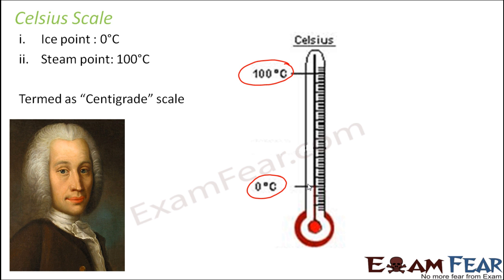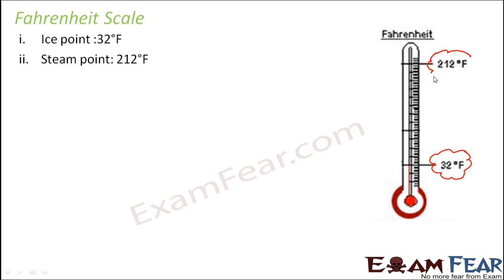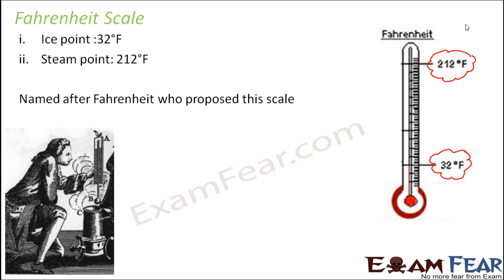The next scale is the Fahrenheit scale, named after the scientist Fahrenheit who proposed it, denoted by degree F. In the Fahrenheit scale, the ice point is 32 degrees Fahrenheit and the steam point is 212 degrees Fahrenheit. So 0 degree Celsius is equivalent to 32 degrees Fahrenheit, because the temperature at which water starts to freeze is 0°C in Celsius and 32°F in Fahrenheit — that is how the two scales are related.